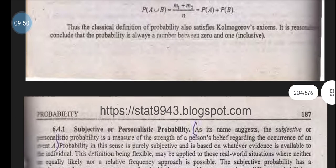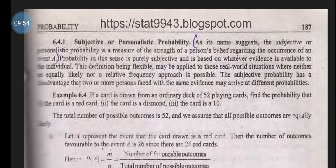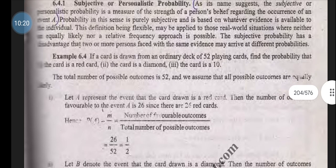Subjective or personalistic probability: As its name suggests, subjective or personalistic probability is a measure of the strength of personal belief regarding the occurrence of an event. Probability in this sense is purely subjective and is based on whatever evidence is available to the individual. This definition is flexible and may be used in real-world situations where neither equally likely outcomes nor relative frequency approaching is possible.